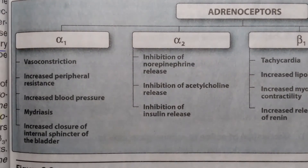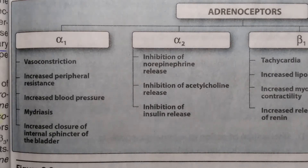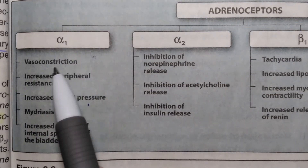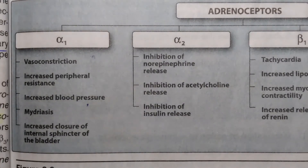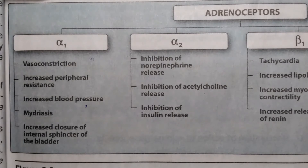Other than vasoconstriction, alpha 1 also causes increased peripheral resistance. As vasoconstriction occurs, it causes increased peripheral resistance because peripheral resistance is the resistance which vessels exert on blood flow. As there is vasoconstriction, there is less space in the vessel, creating resistance to blood flow and causing an increase in blood pressure. All three effects — vasoconstriction, increased peripheral resistance, and increased blood pressure — are interlinked.